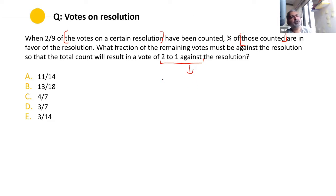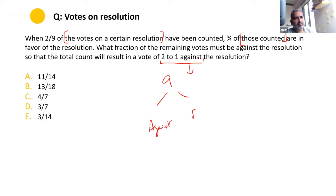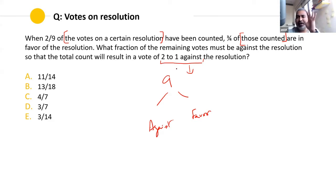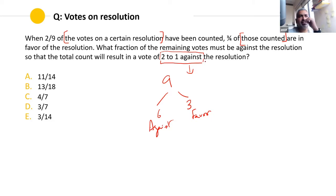What does 'two to one against' mean? Let's say total votes are nine. For every two votes against, there should be one vote in favor. So out of nine total votes, six will be against and three will be in favor. That's what that phrase means. Was this clear initially when you were working on it on your own?